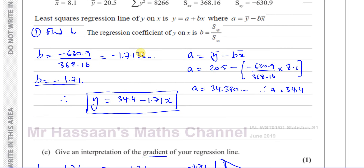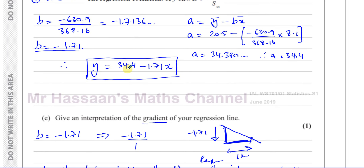They only want the gradient here. The y-intercept — which would represent when the distance from the clinic to the hospital is zero — doesn't really make much sense in this context, since the clinic would be inside the hospital. But the gradient interpretation does make sense.